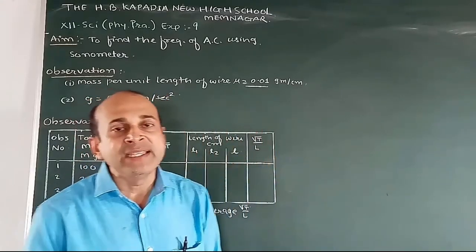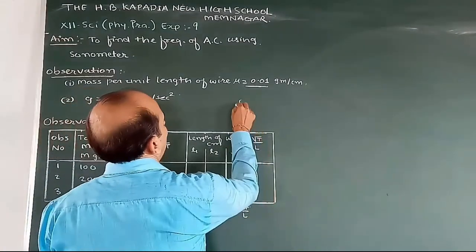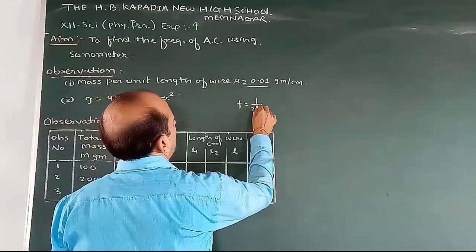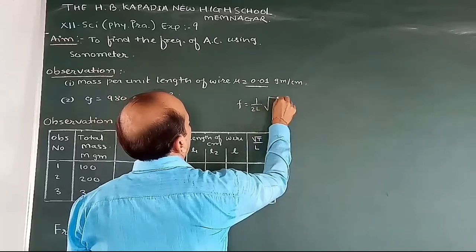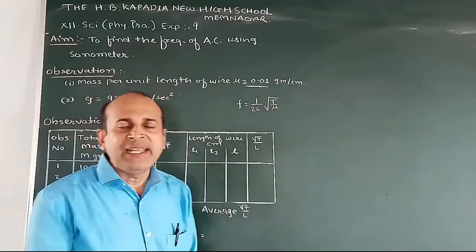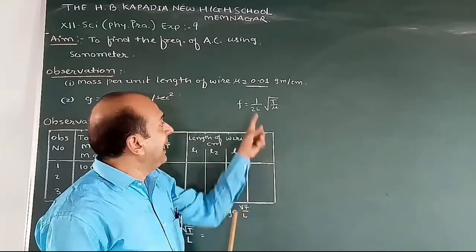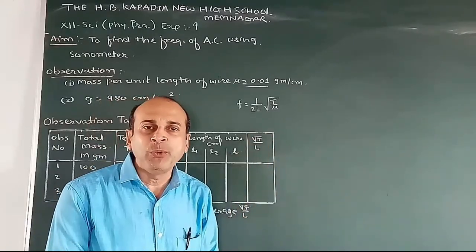The formula for that is F equals 1 over 2L times the square root of T over mu. What is T? T is tension. Mu is unit mass per length of the wire, and L is the length of the wire between two supports.